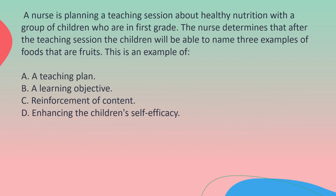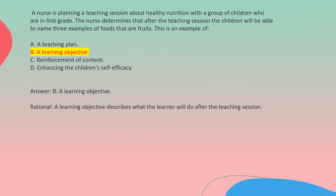A nurse is planning a teaching session about healthy nutrition with a group of children who are in first grade. The nurse determines that after the teaching session, the children will be able to name three examples of foods that are fruits. This is an example of: A. A teaching plan. B. A learning objective. C. Reinforcement of content. D. Enhancing the children's self-efficacy. Answer: B. A learning objective. Rationale: A learning objective describes what the learner will do after the teaching session.